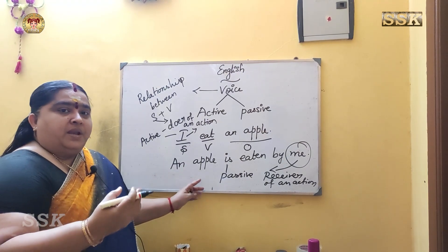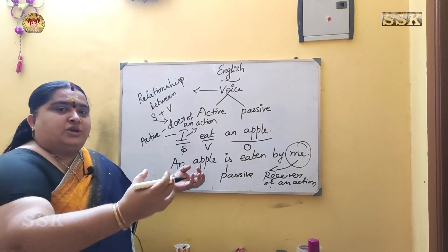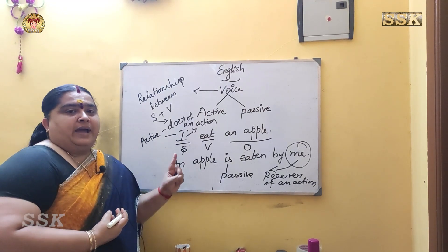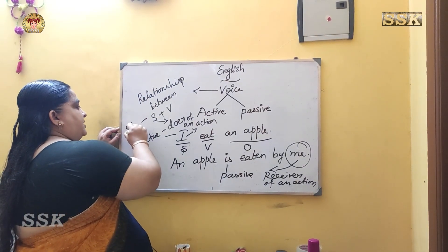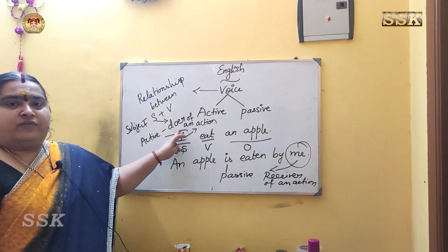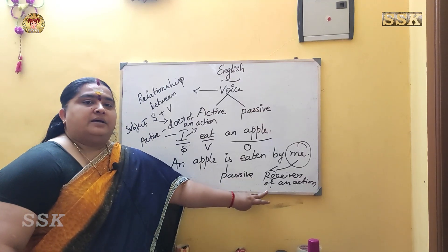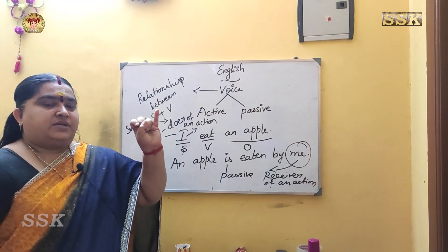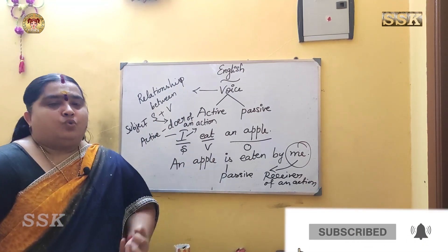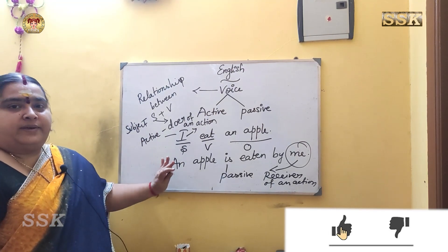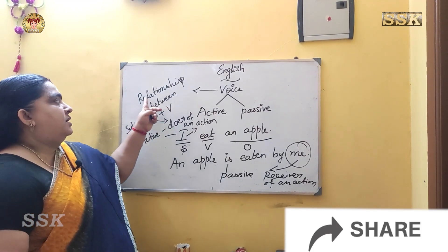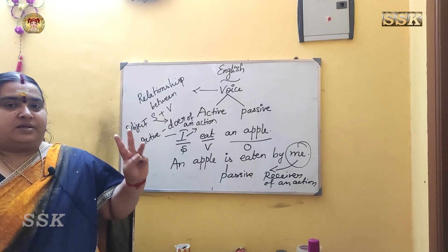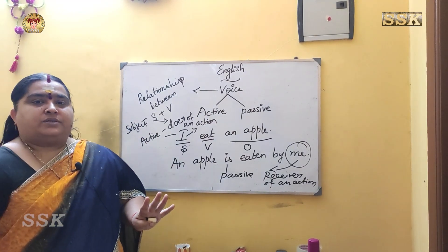In the second sentence, the apple is the subject and it receives the action. That's why this is passive voice. Active voice means the subject will be the doer of an action. Passive voice means the subject will be the receiver of an action. Performer means active voice; receiver means passive voice. For example: active voice — 'I eat an apple'; passive voice — 'an apple is eaten by me.'